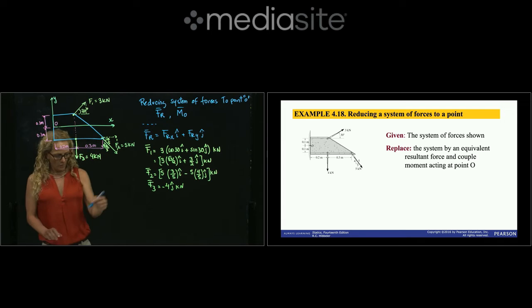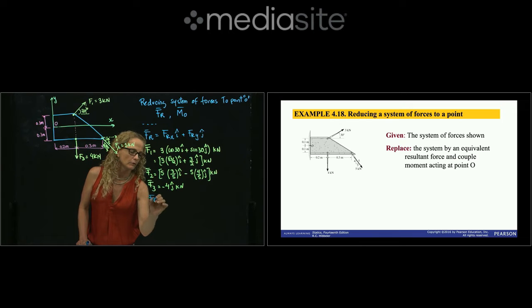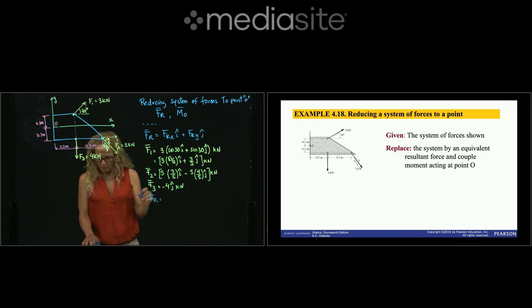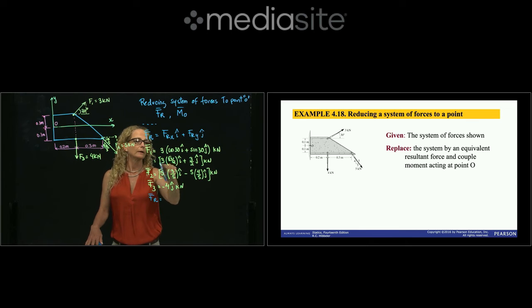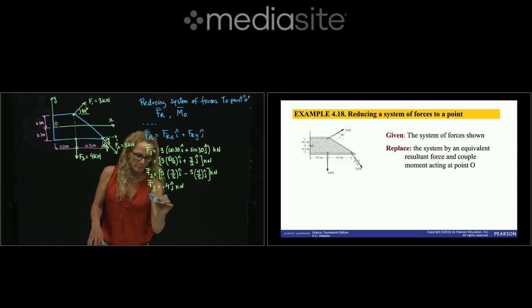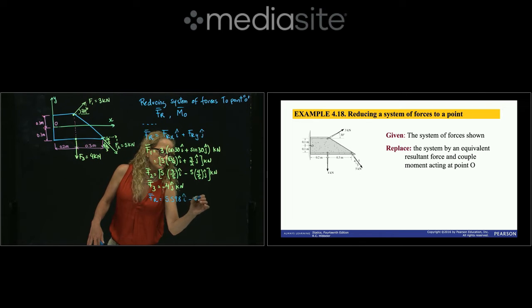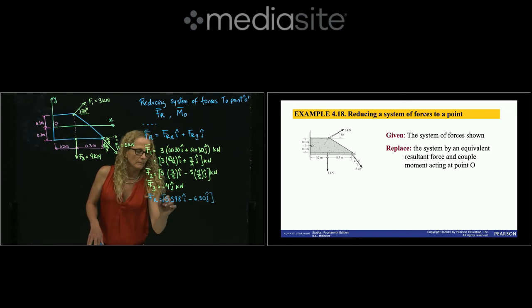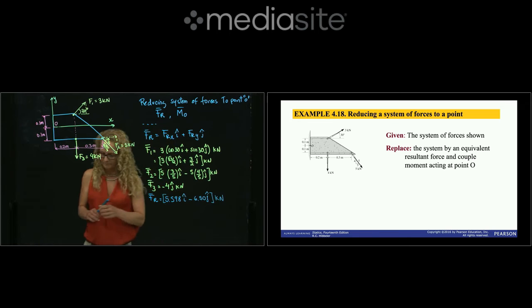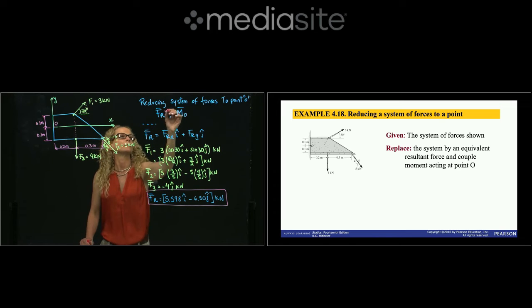Adding all the X values and all the Y values, the resultant force equals 5.584·I + 6.50·J kilonewtons. I add the X components from F1 and F2 — F3 has no X component — and sum the Y components from all three forces to get those results.